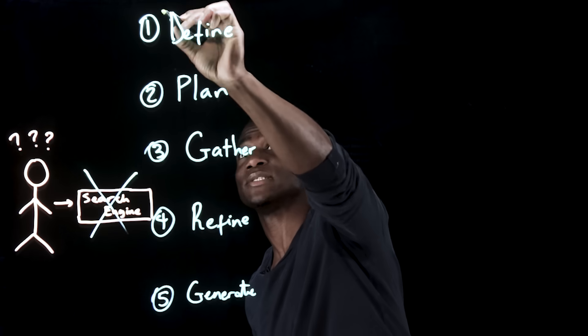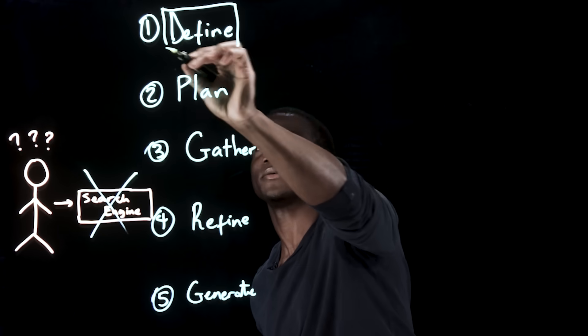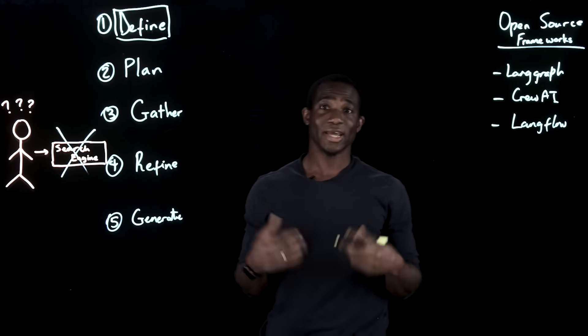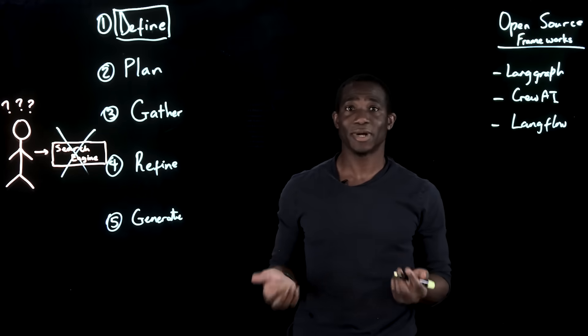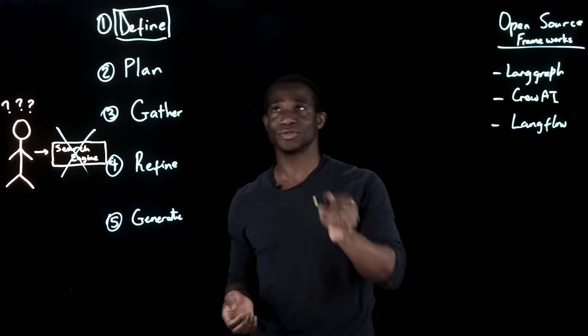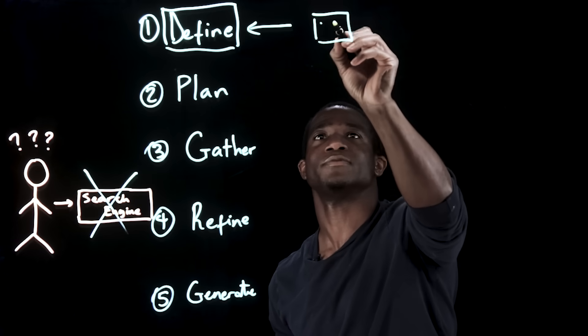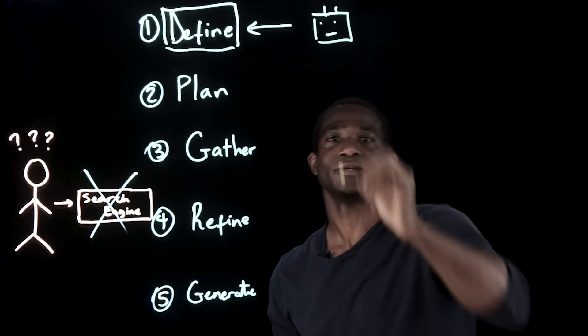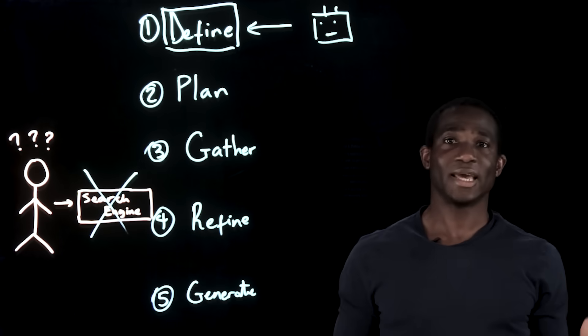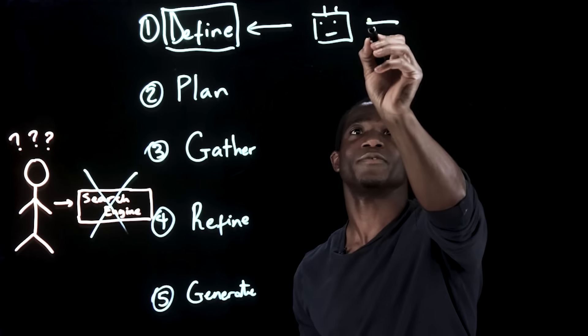So, starting, for example, at step one, one agent in the system could be responsible for defining the research goal. Let's see, one little agent here, and he accepts a query from a user.